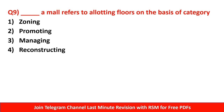Question number 9: 'Dash' in a mall refers to allotting floors on the basis of category. In a mall, floors are allotted based on category. Options are zoning, promoting, managing, or reconstructing. The right answer is zoning — because different zones are prepared for different categories on different floors. So zoning is the right answer.